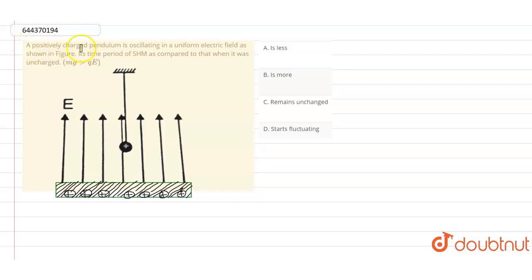So guys, here in this question it is given that a positively charged pendulum is oscillating in a uniform electric field as shown in the figure. So it's time period.